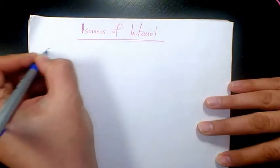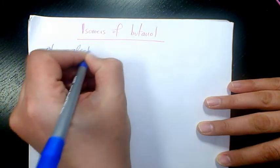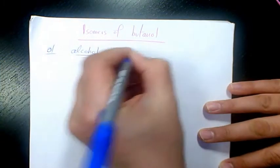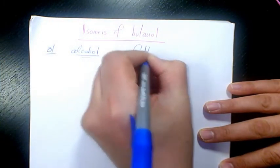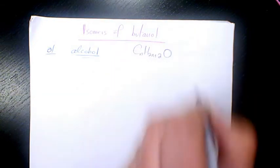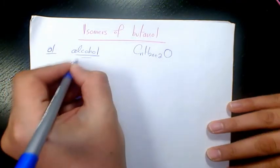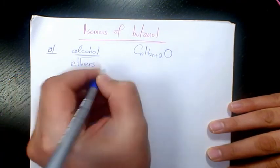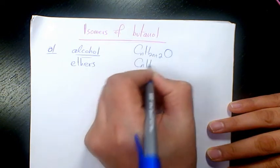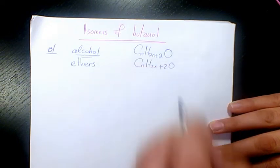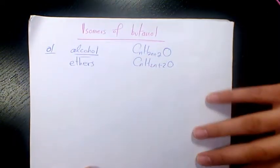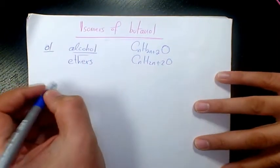What's up guys, this is Massey. Welcome to another video. In this video I want to show you what are the isomers of butanol. Butanol ends with O-L, so it means we are dealing with an alcohol. The general formula for alcohols is C-N H-2-N plus 2-O. On the other hand, we have ethers. Ethers also have isomers with alcohols and they have the same general formula as well. So let's find out the isomers of butanol.